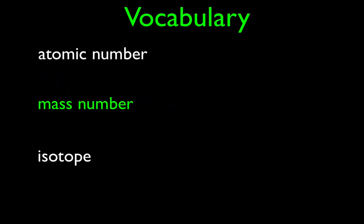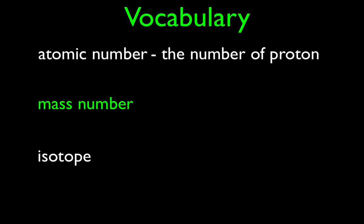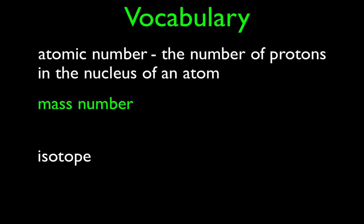There is some very important vocabulary we need to know. You should write this down. These are the three vocabulary words. One is the atomic number. We talked about this earlier — the atomic number is the number of protons in the nucleus of an atom. It's some whole number; you cannot have a fraction of a proton.